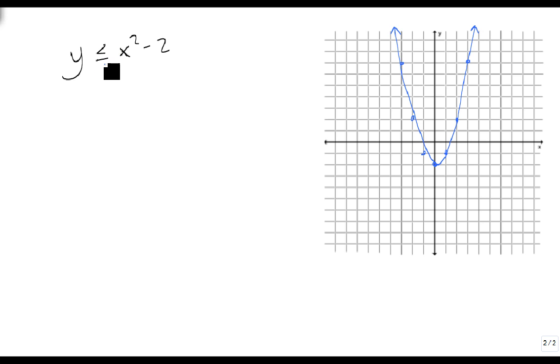And it's solid because it's an or equals, but now we want to know when is this true. So again, we just pick a point that's not on the graph, so I'm going to pick this one, 0, 0, and it's going to tell me.